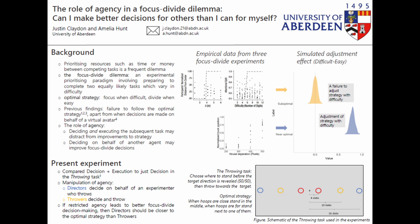We hypothesized that the restriction of agency enabled participants to make better focus divide decisions. In the present experiment, we use the throwing task, which is depicted in the schematic on the right, and we experimentally manipulated agency over both the decision and task execution elements of the task.